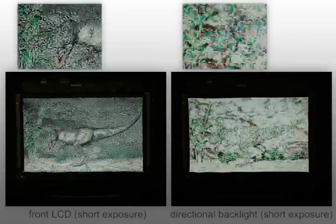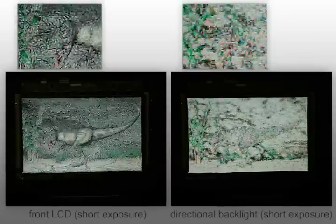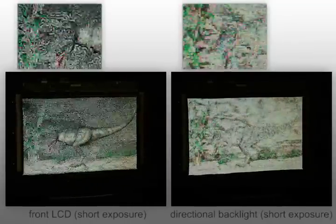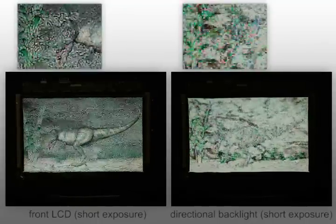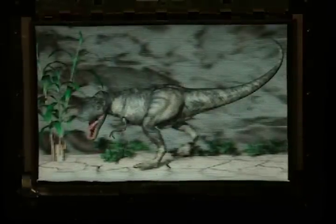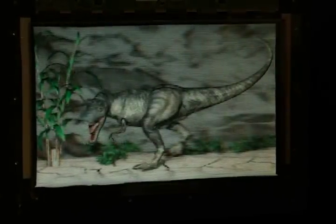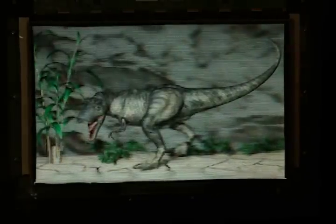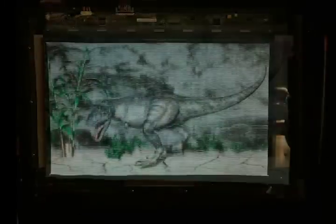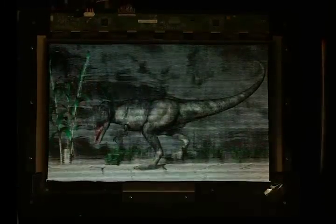The directional backlight displays much of the angularly varying information around the depth discontinuities in the scene. Both the front LCD and the backlight encode image information in time-varying, high-frequency structures. When perceived as time averages, these patterns are invisible, instead creating a convincing 3D effect for vantage points both horizontally and vertically distributed about the display.